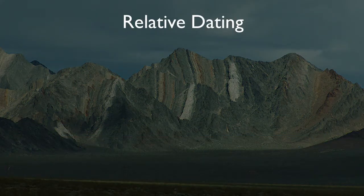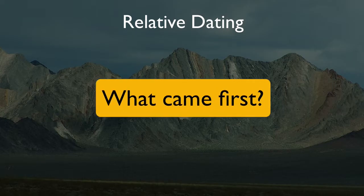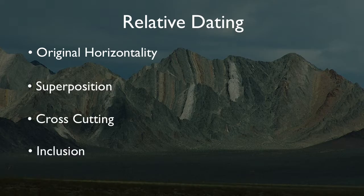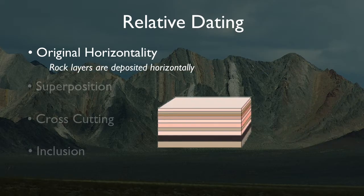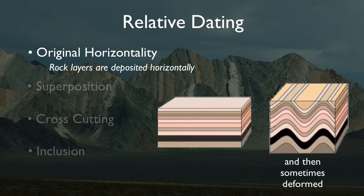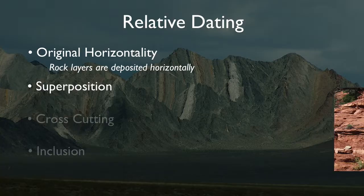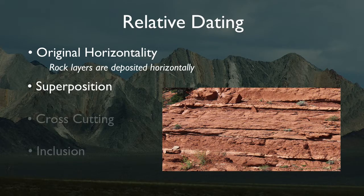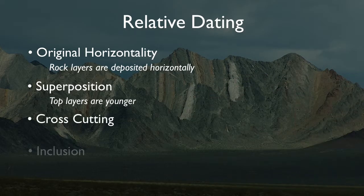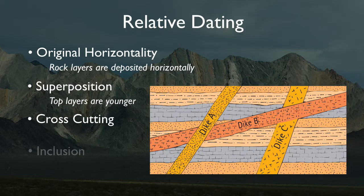The principles of relative dating help piece together Earth's history and answer what came first. There are four straightforward relative dating principles. First, original horizontality: layers of sediment are deposited horizontally. Second, superposition: in an undeformed horizontal sequence of sedimentary rocks, the top rock layer is younger than the bottom layer.